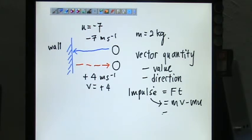Impulse, arrow, MV minus MU. So this 2 kg is given. You can factorize the M. And V minus U is what we call positive 4 minus minus 7. So you get a 2, 4 plus 7, 11. So in the final answer, it should be 22.